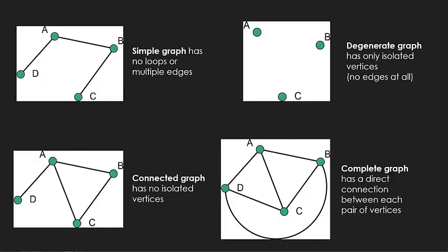Some other key definitions that we need to know. A simple graph is basically any graph at all that has no loops and no multiple edges. A degenerate graph has only isolated edges, so just a group of vertices, no edges at all. A connected graph means that there are no isolated vertices at all. So it can have loops, it can have multiple edges, but the only stipulation there with a connected graph is no isolated vertices. And finally, a complete graph means there is a direct connection from each vertex to all others. So we can see here we've got a complete graph with four vertices.